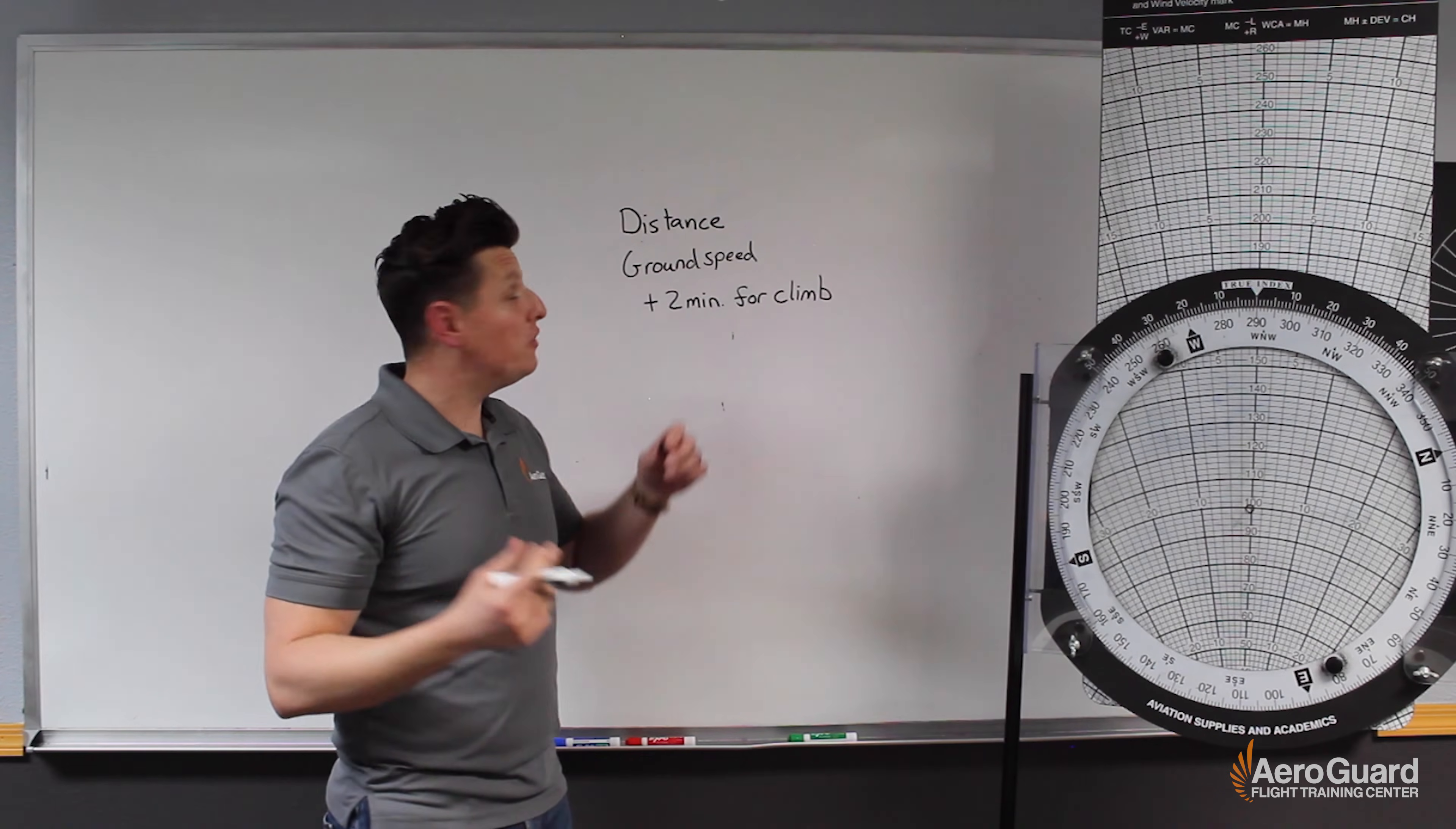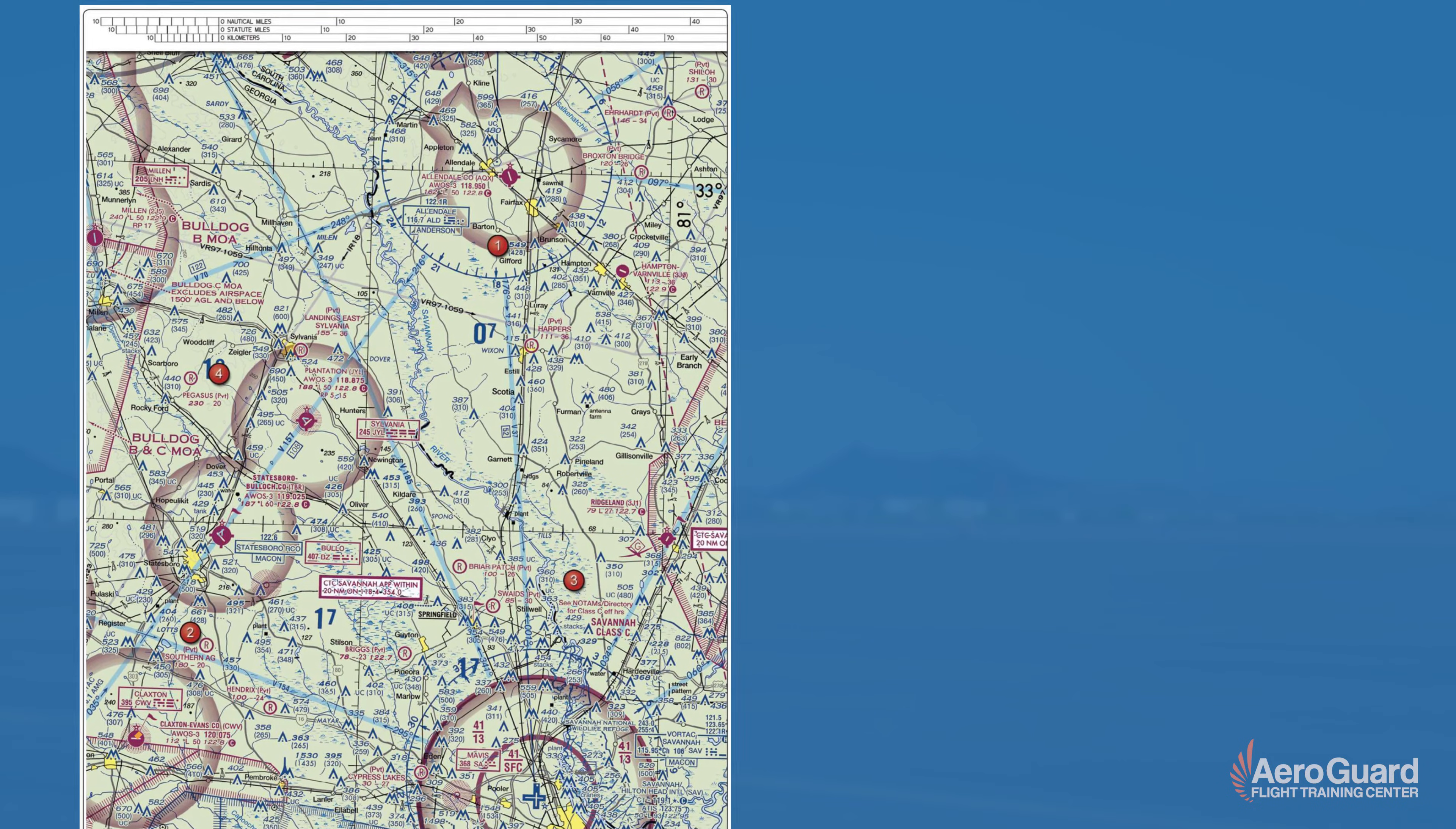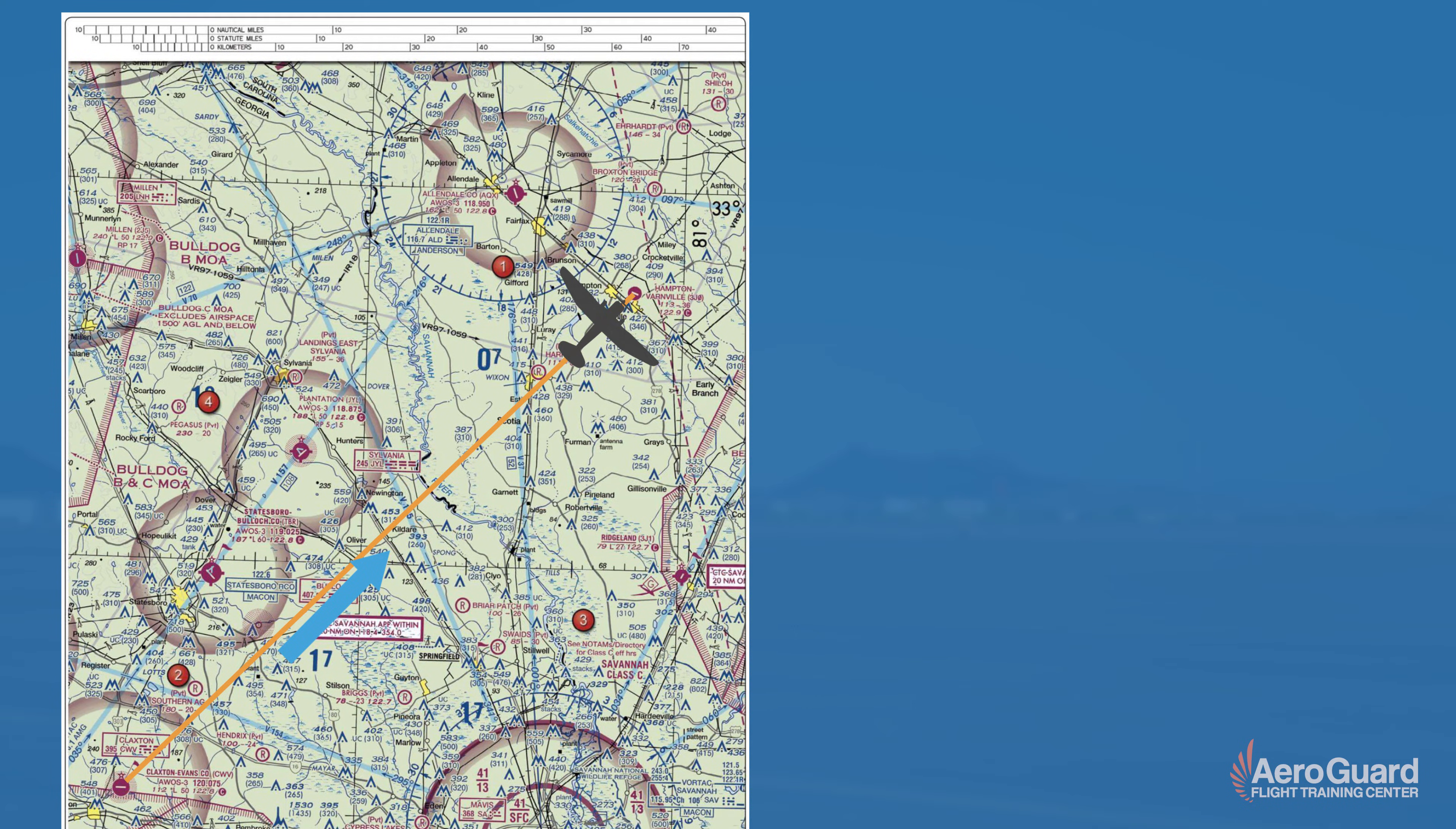Okay so our first step, let's jump into the chart excerpt that they gave us and let's calculate what this distance is going to be. Let's look at the image provided and to start let's draw the true course by connecting the Claxton-Evans County Airport to the Hampton-Varnville Airport. I'll put a little arrow to remind us which direction we are flying.